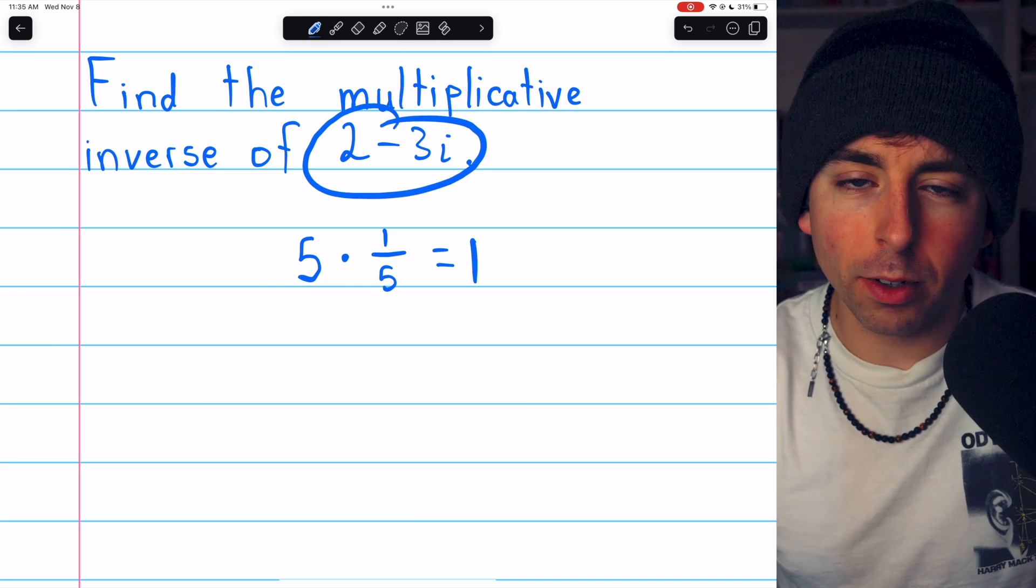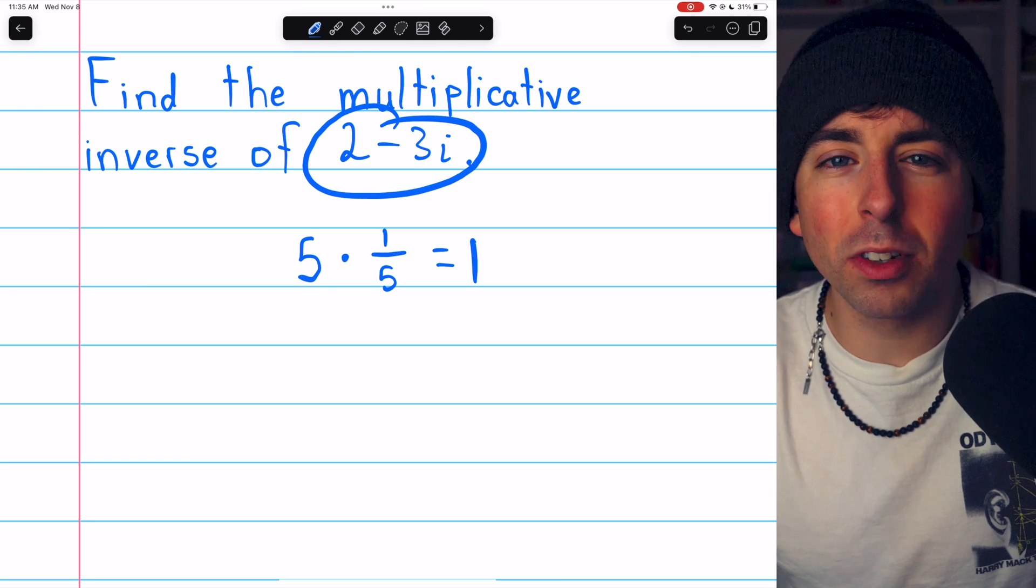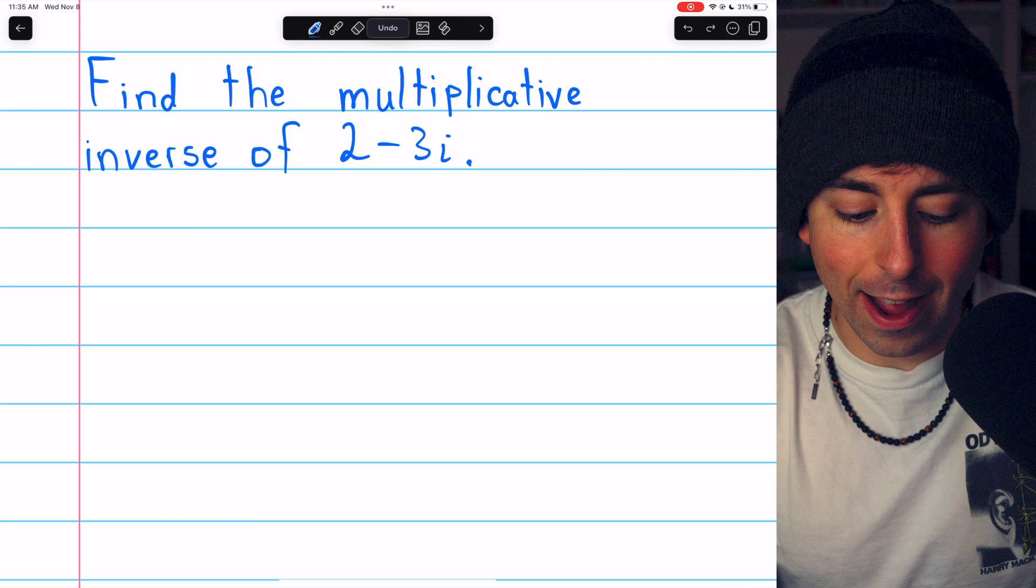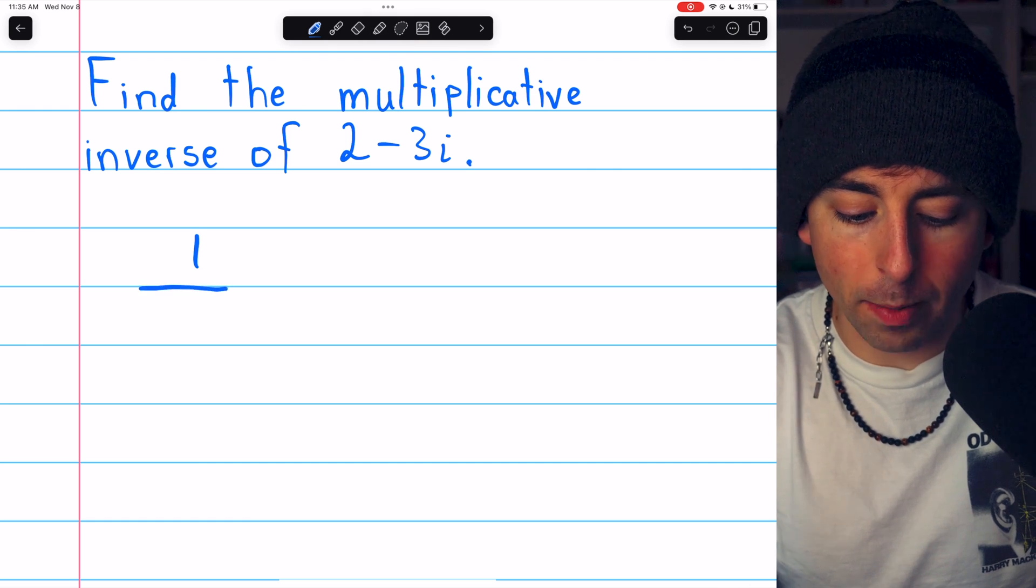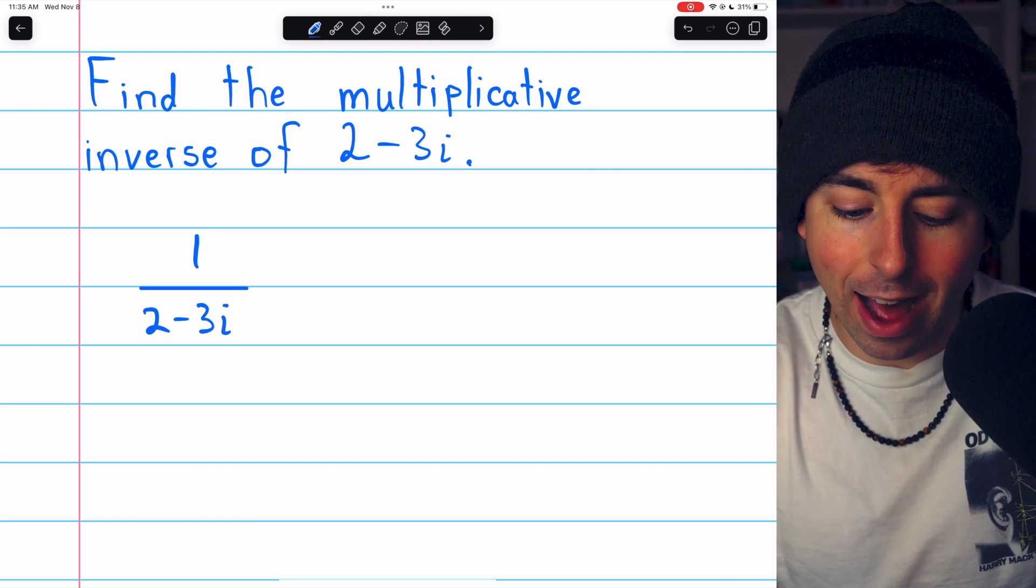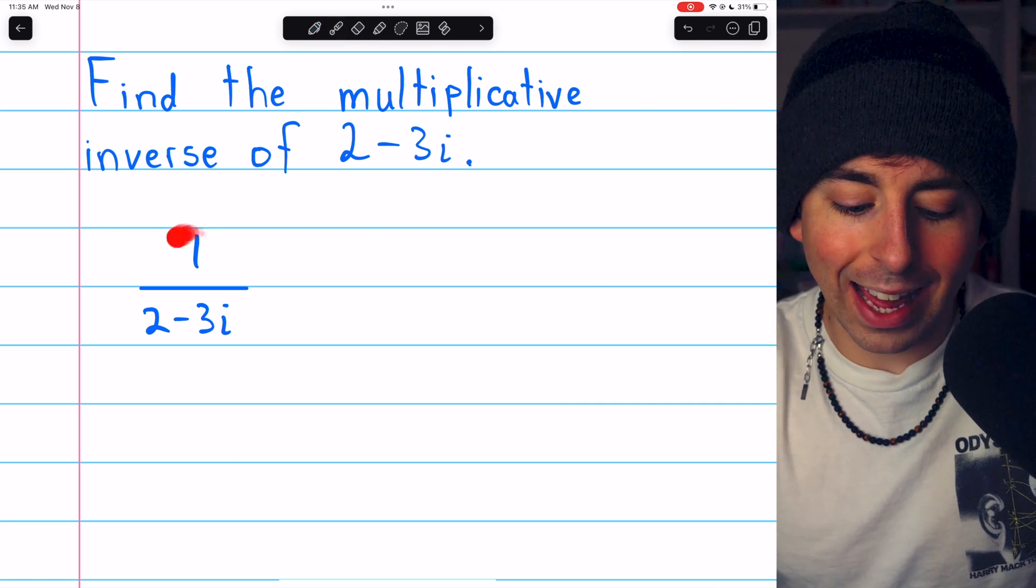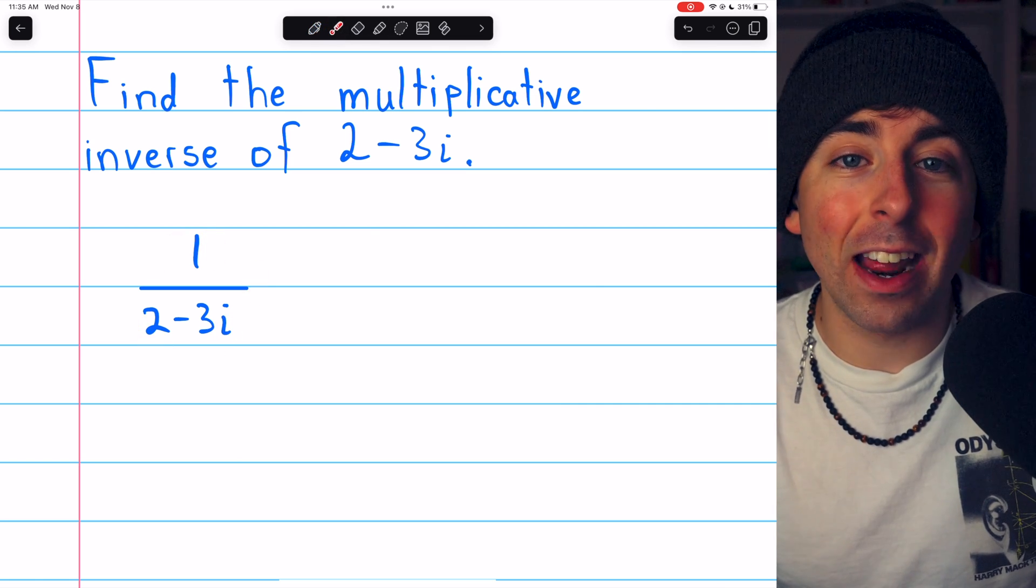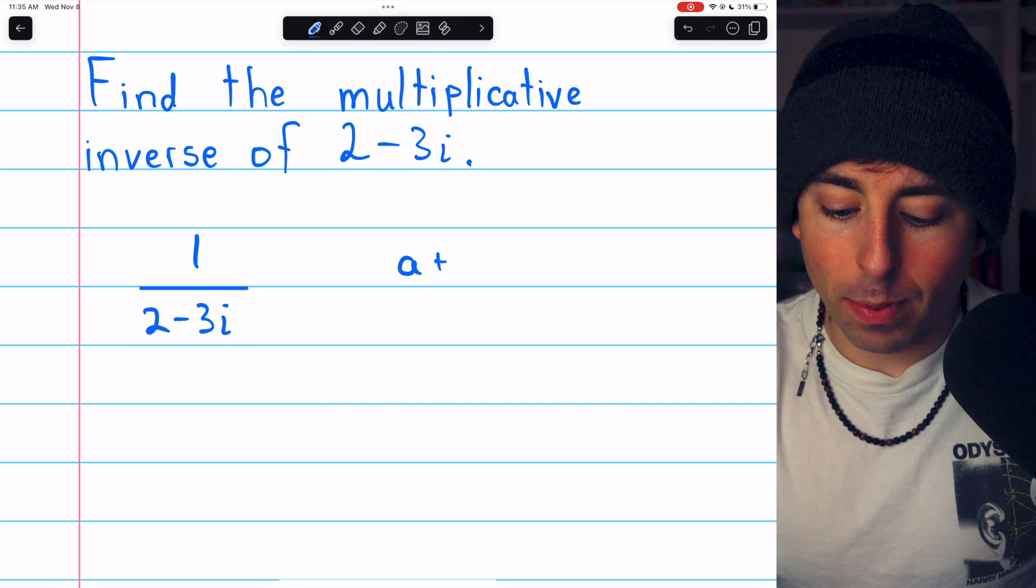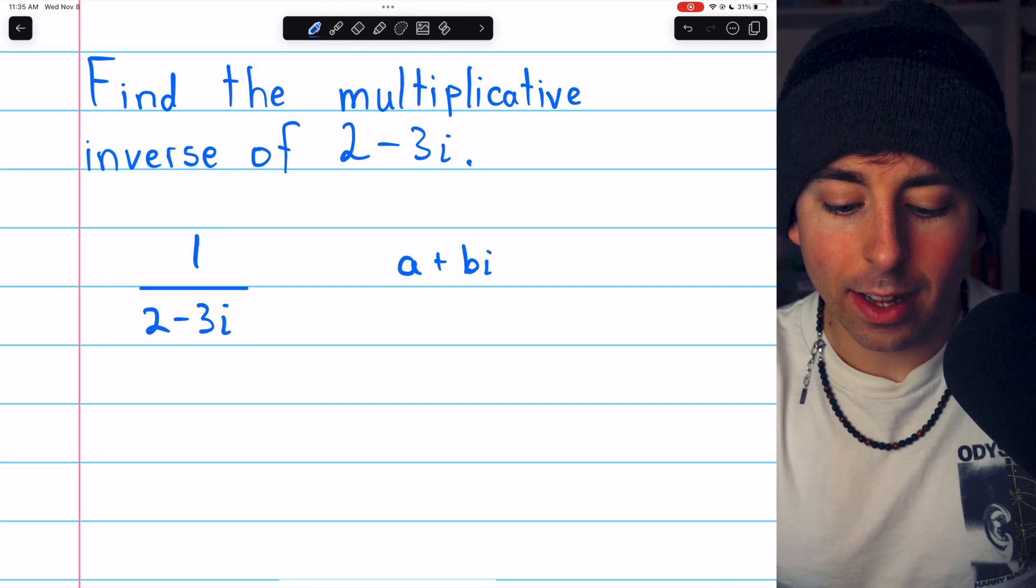With complex numbers, it works pretty similarly. We'll just have to do a little bit of extra work. The multiplicative inverse of 2 minus 3i, just like for real numbers, is just 1 over 2 minus 3i. But of course, we would like to write this in standard form. We want to get this into the form of a plus bi.